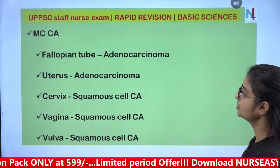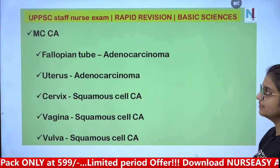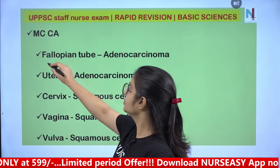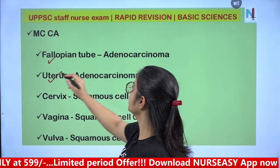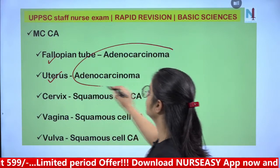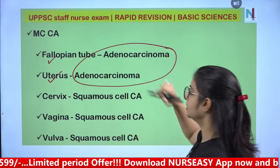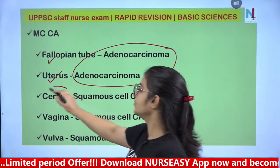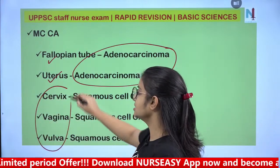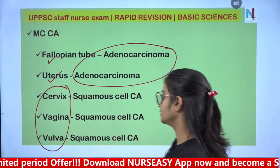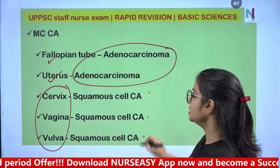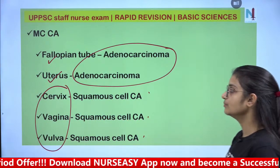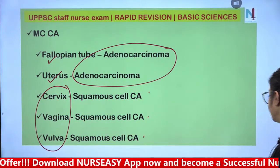The epithelial lining of the fallopian tube is ciliated columnar, because cilia are present for the movement of the ovum. Uterus has columnar epithelium. Vagina has stratified squamous epithelium. The most common type of cancer in fallopian tube and uterus is adenocarcinoma. In cervix, vagina, and vulva, the most common cancer is squamous cell carcinoma.